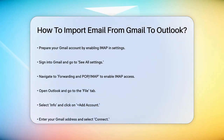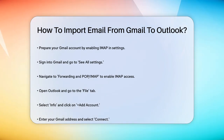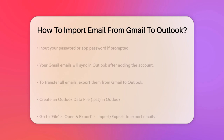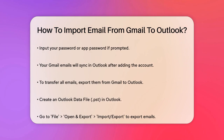Next, you'll need to add your Gmail account to Outlook. Open Outlook and go to the File tab. Select Info and then click on Add Account. Enter your Gmail address, and if prompted, select Connect and enter your password. If you're using an app password, make sure to use that instead.